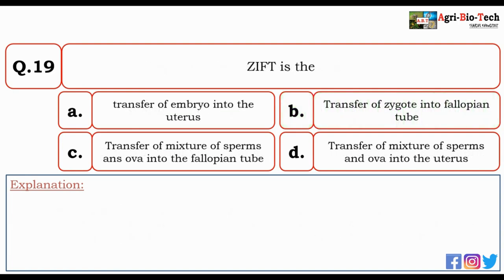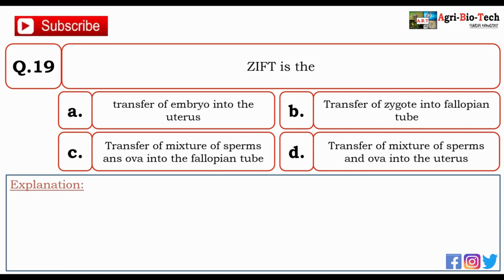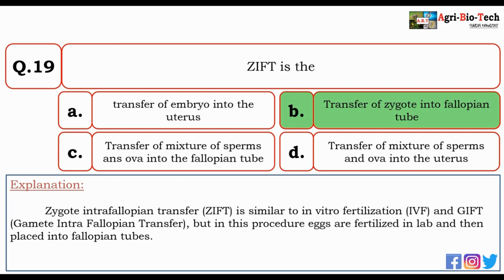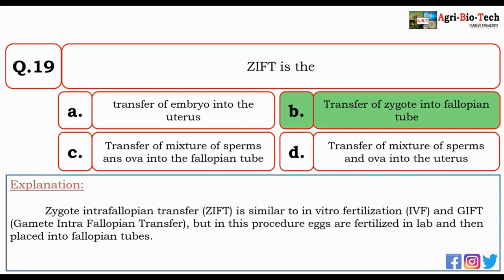Next question: ZIFT is — transfer of embryo into uterus, transfer of zygote into the fallopian tube, transfer of mixture of sperms and ova into the fallopian tube, or transfer of mixture of sperms and ova into the uterus? The correct answer is B — transfer of zygote into the fallopian tube. ZIFT is similar to IVF and GIFT, but in this procedure eggs are fertilized in the lab and then placed into the fallopian tubes.